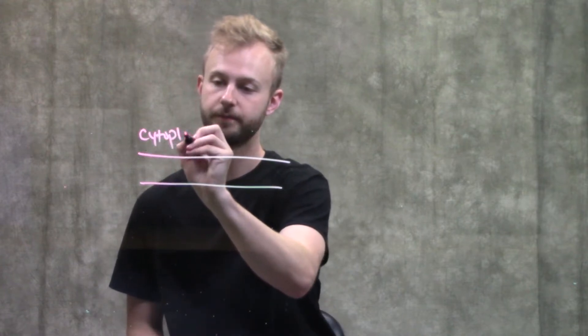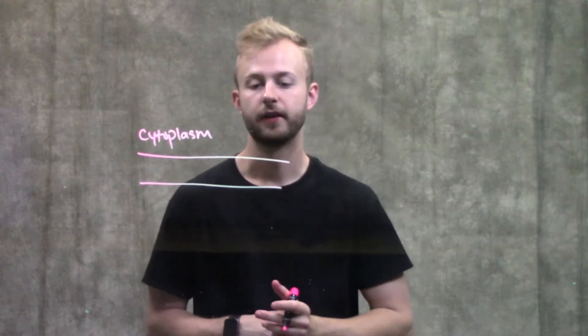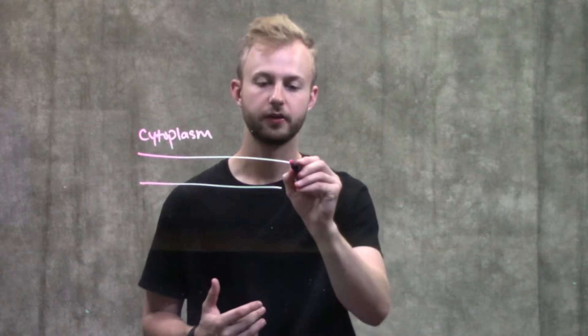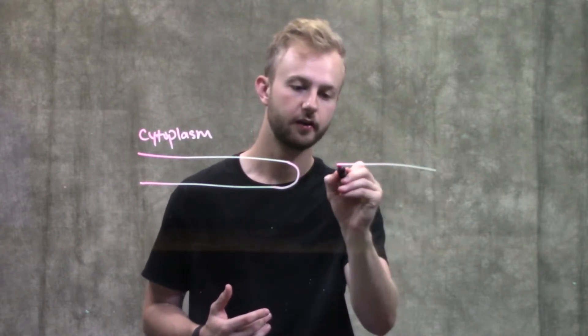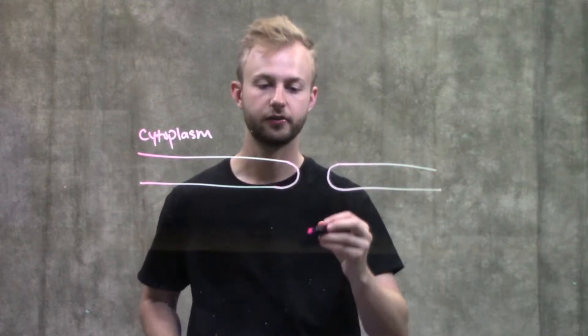Say that this is the cytoplasm, and then this will be inside the nucleus. The only place where these membranes kind of stop a little bit is at something called nuclear pores. There, the membrane will just fold around and then go back in the other direction.